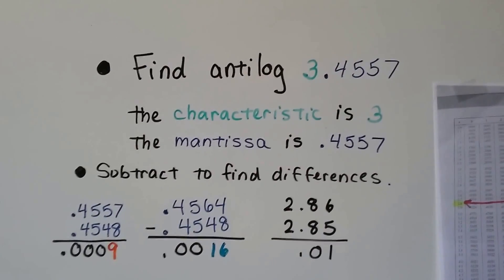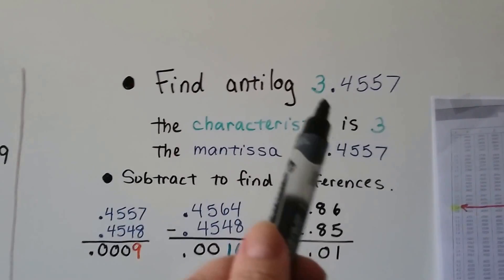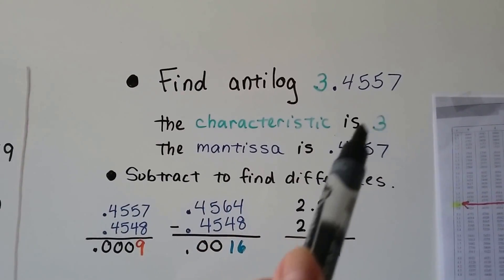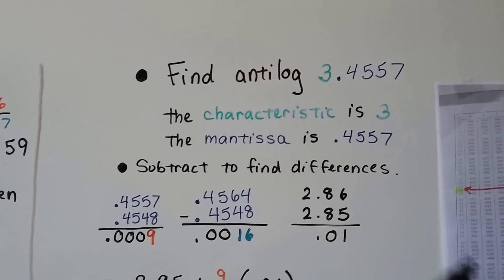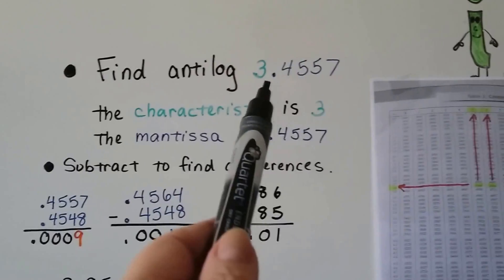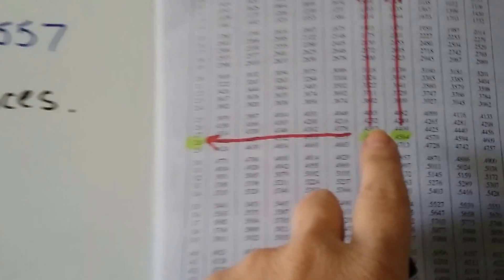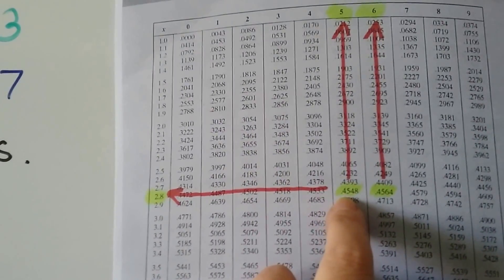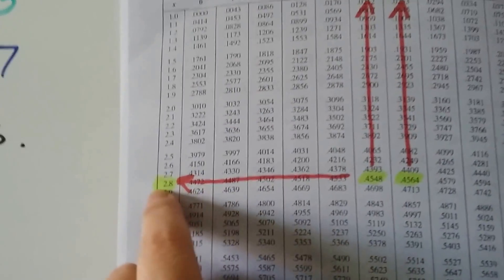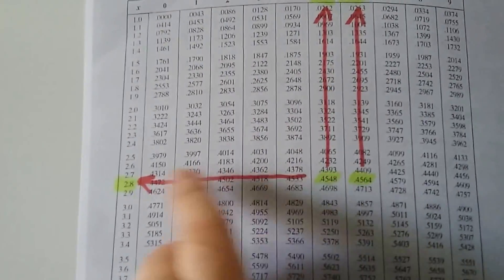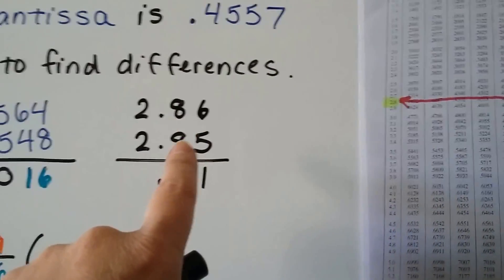It says find anti-log 3.4557. When we know, when it's like this, there's no minus 10, that that's the characteristic. It's a 3. The mantissa is .4557. And, we locate the .4557 on here. Well, it's not there, but it's in between .4548 and .4564, which would be a 2.85 and a 2.86. So, it's somewhere between 2.85 and 2.86.